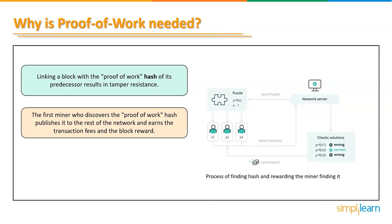The first miner who discovers the proof of work answer publishes the solution to the rest of the network. When a new block is discovered, all nodes are notified and the answer is checked twice before moving on to the next block. If correct, the block's miner earns the transaction fees and the block reward.